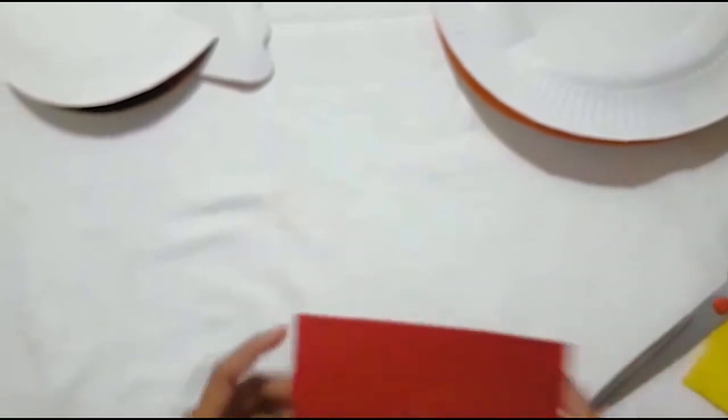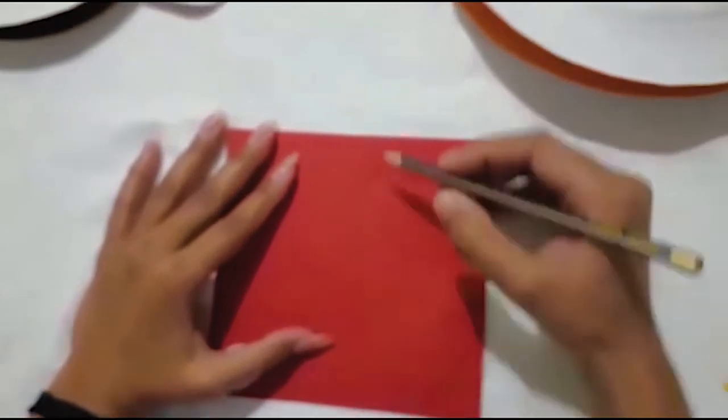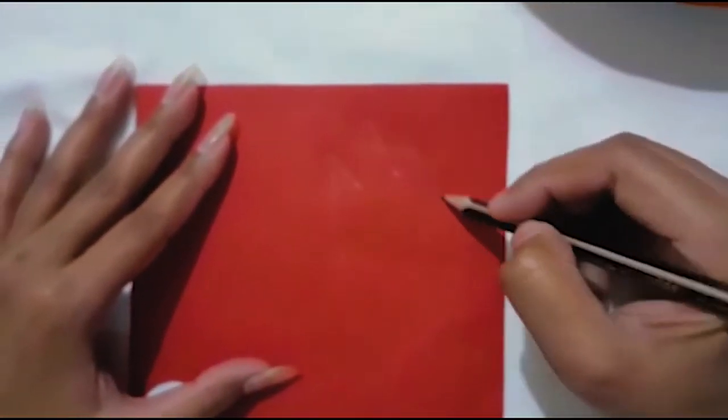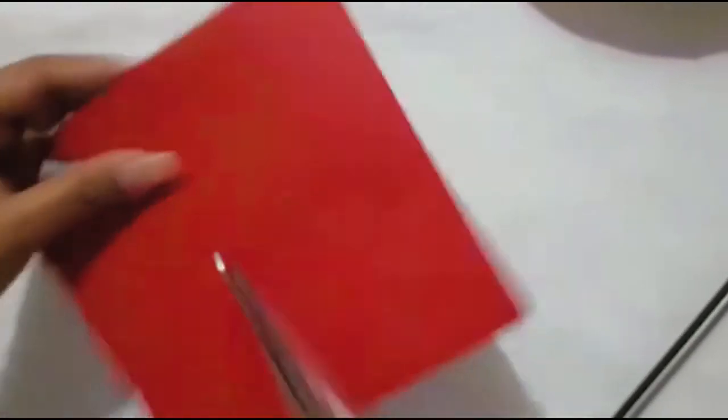Now pick up a piece of red chart paper for making a crown. Draw a crown in a grassy shape like this. Now take a pair of scissors and cut it out.